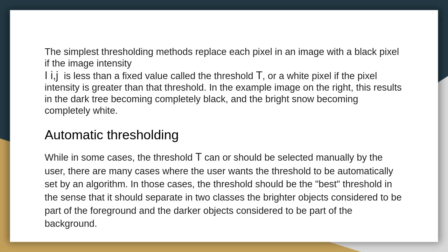Brighter objects are considered part of the foreground, while darker objects are considered part of the background. We can choose the best threshold to separate foreground from background.